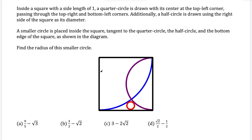What's up, I'm Vin and I'm going to solve this geometry challenge question that came from a high school math competition. We have inside a square with side length one, a quarter circle is drawn with its center in the top left corner and the circle passes through the top right and bottom left corners.